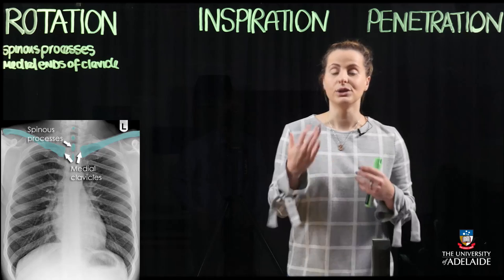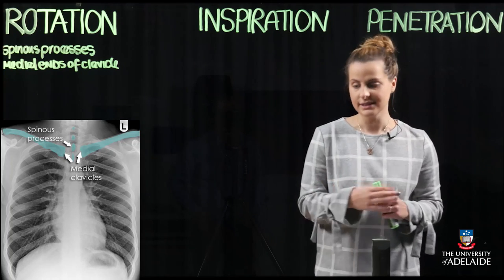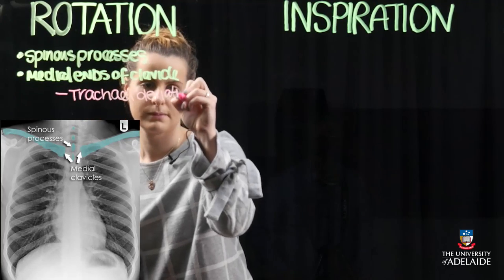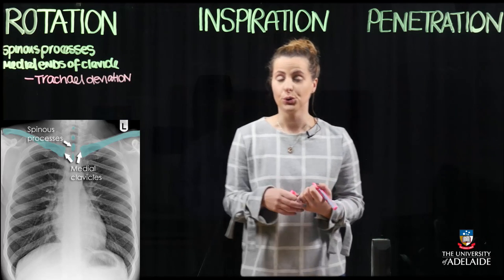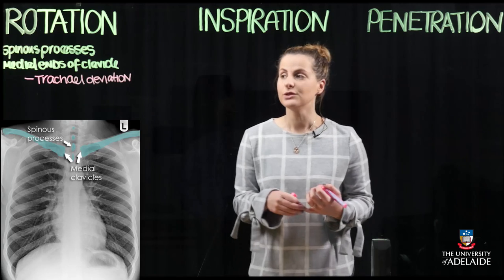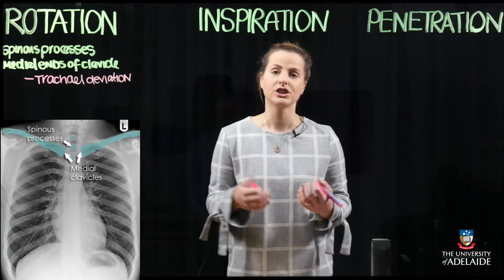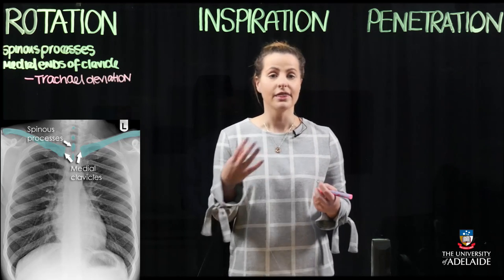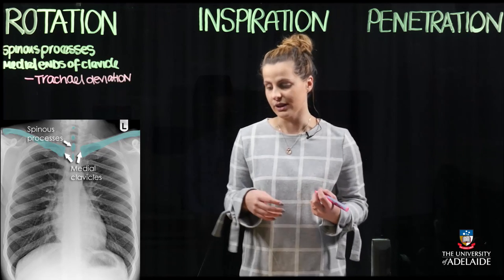Rotation makes it a lot more difficult to assess the heart borders or contours, as well as the appearance of the lungs and structures which are fairly parasagittal, such as the hila of the lungs and the major vessels stemming from this structure.